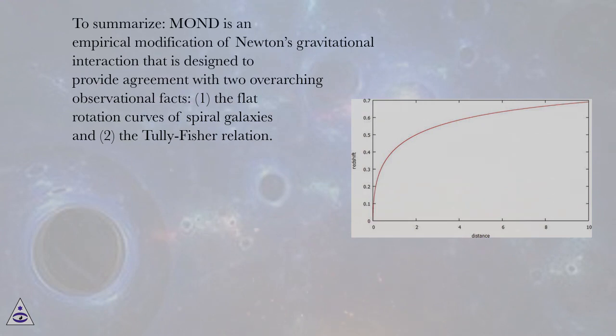To summarize, MOND is an empirical modification of Newton's gravitational interaction that is designed to provide agreement with two overarching observational facts: one, the flat rotation curves of spiral galaxies, and two, the Tully-Fisher relation.